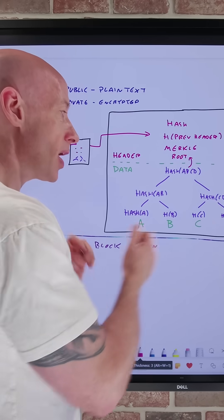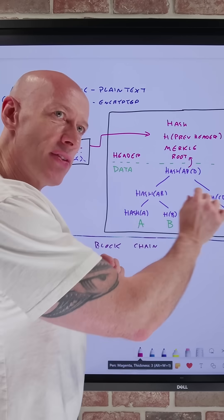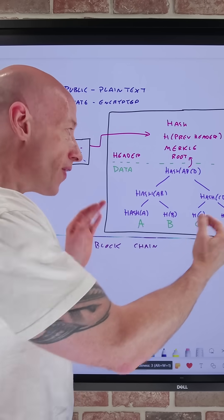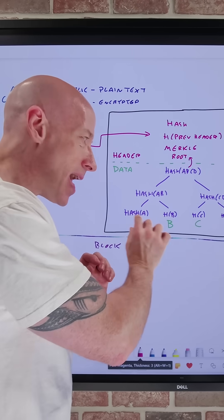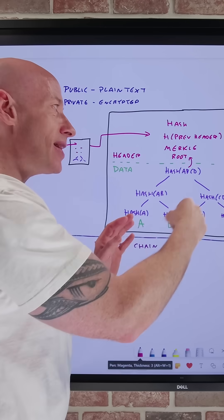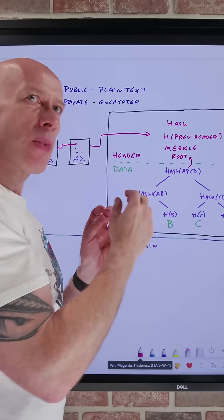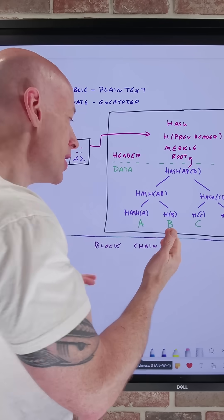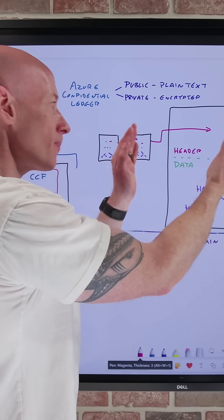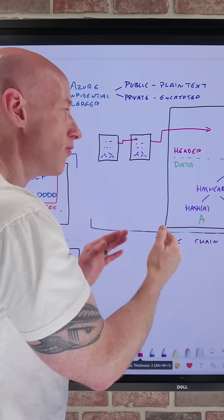So it's using blockchain where every piece of data is part of a tree of hashes so that any change, no matter how small, would invalidate the overall root hash and we would know there's been some change. And then these various blocks are linked to each other to form a blockchain.